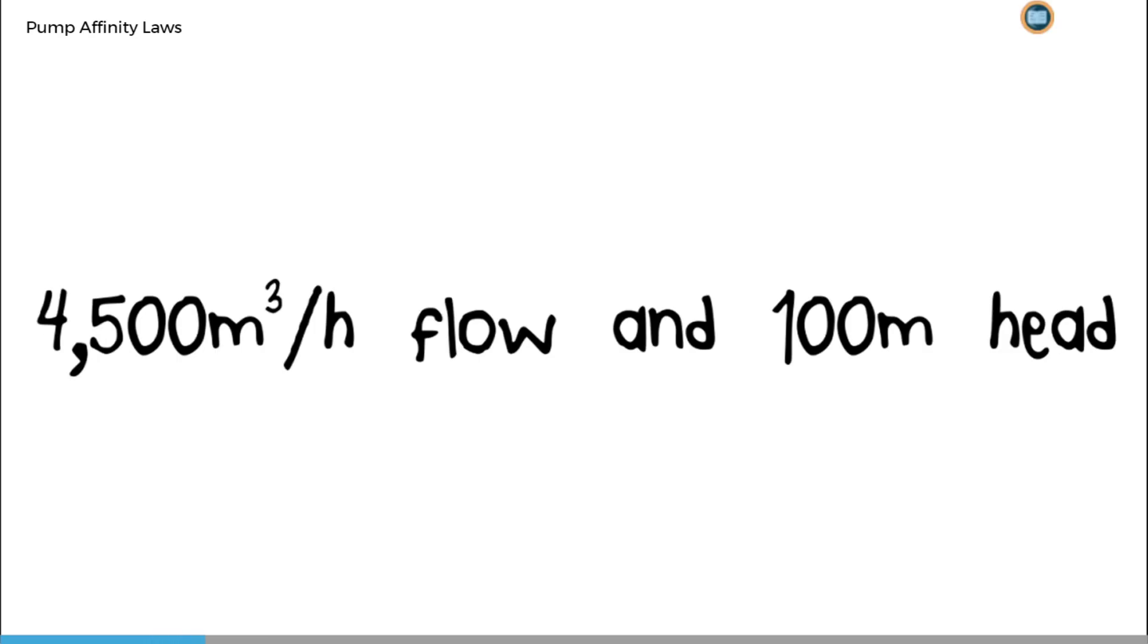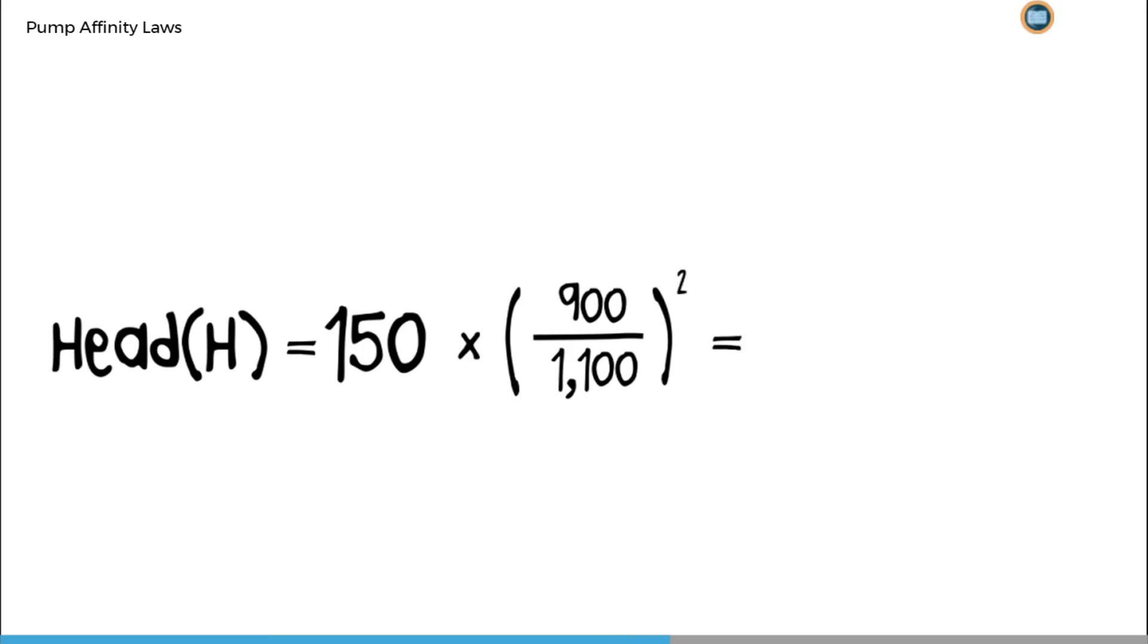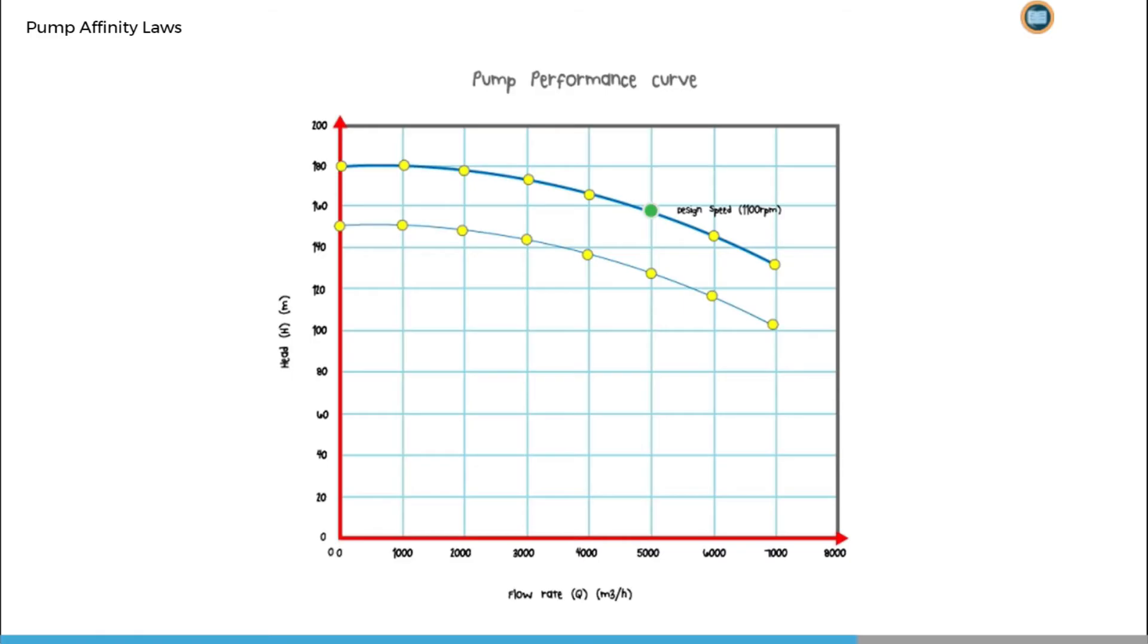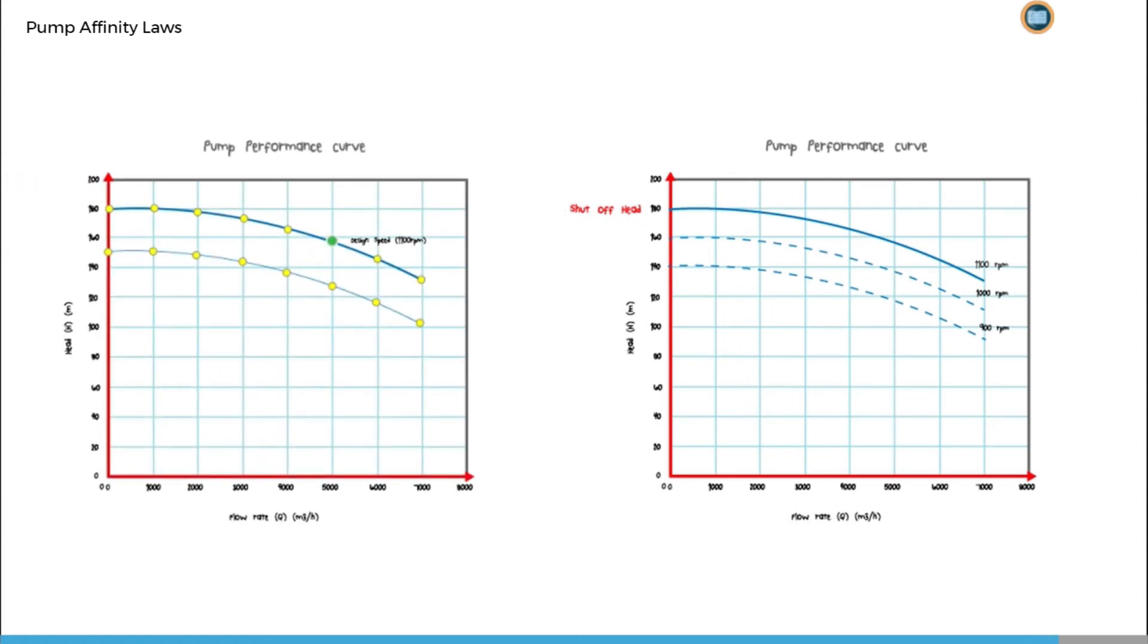Using our formula from earlier, we can work out the flow rate by multiplying the design flow rate by the pump rotational speed divided by the design rotational speed. This gives us a flow rate of 4,500 metres cubed per hour. Similarly, we can work out the head by multiplying the design head by the pump rotational speed divided by the design rotational speed all squared. This gives us a head of 100.4 metres. In fact, we can calculate the head and corresponding flow rates for all points on our performance curve. We can do this for a range of pump speeds. The resulting performance curves will be mathematically similar to the design performance curve or HQ curve for design speed that we saw earlier in the module.